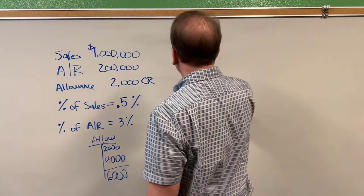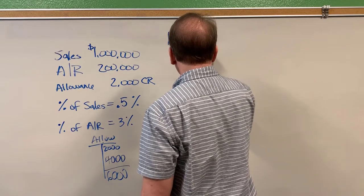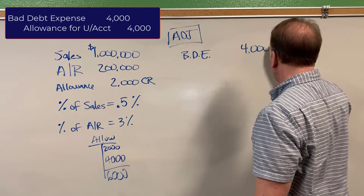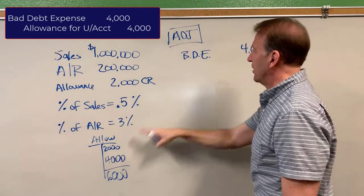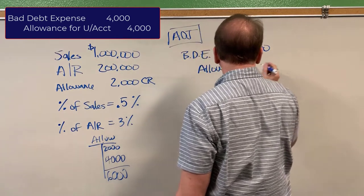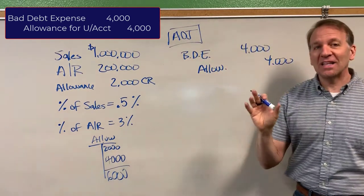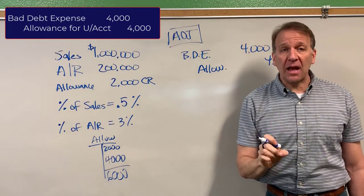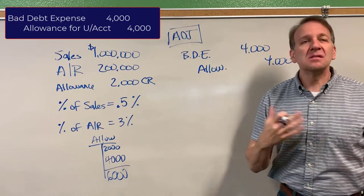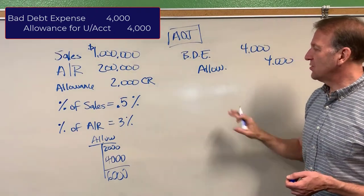So then up here I'm going to put down our adjusting journal entry then is bad debt expense, I'm going to abbreviate here, four thousand dollars, this adjustment that's where we got it from, and then I'm going to credit the allowance, I'm going to abbreviate the allowance, for four thousand dollars and this allowance would be called once again the allowance for doubtful accounts or possibly the allowance for uncollectible accounts something like that.